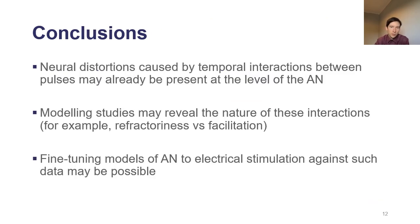To conclude, neural distortions caused by temporal interactions between pulses may already be present at the level of the auditory nerve. Modeling studies may reveal the nature of these interactions, for example refractoriness versus facilitation.